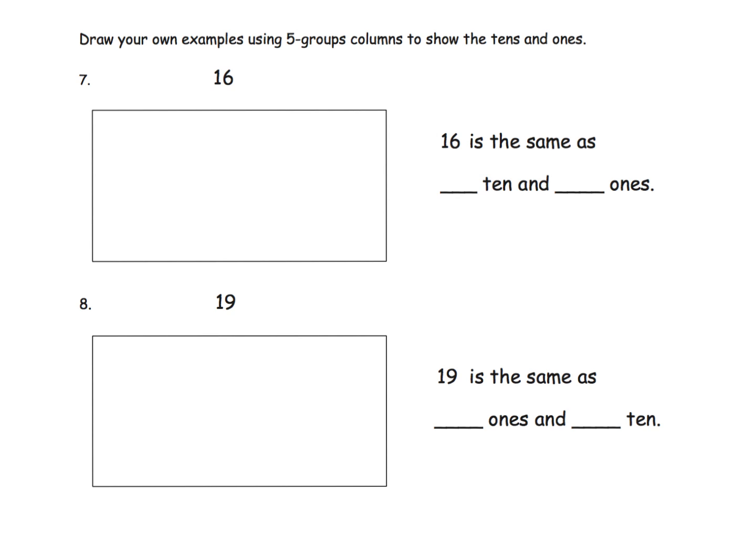And the last slide for this video is just kind of more of the same, only we've removed even more of the scaffolding. Now students simply have the number 16, and their job is to represent that 16 using the columns and the tens and the ones. So we've got the number 16. So here's our column. And we're going to do 1, 2, 3, 4, 5, 6, 7, 8, 9, 10. And then here's another one. And we're going to do 1, 2, 3, 4, 5, 6. So 16 is the same as 1, 10, and 6 ones.